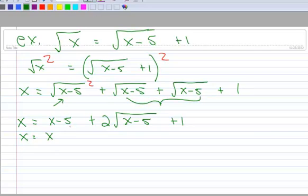So let's leave the X's right now. And I have a minus 5 plus 1, and that would be minus 4. And then I still have this radical piece right here.